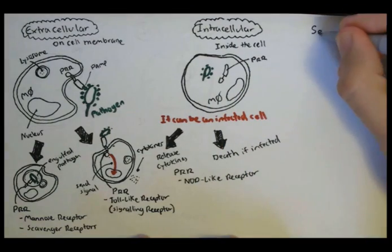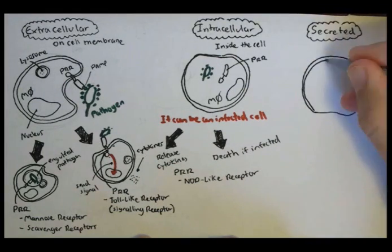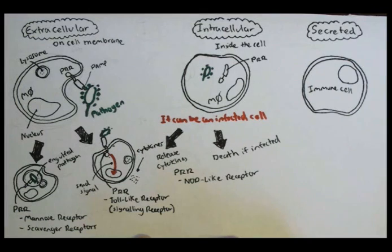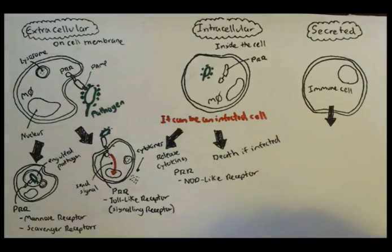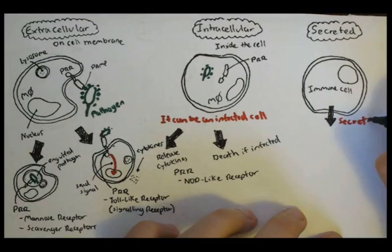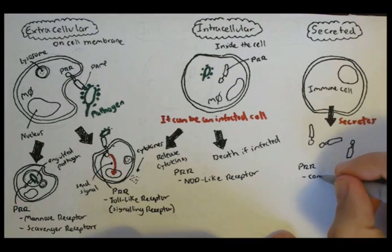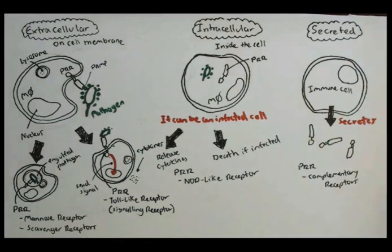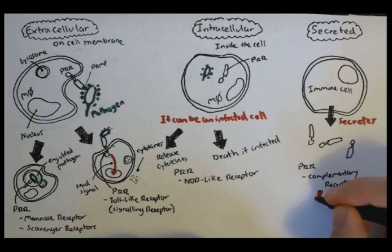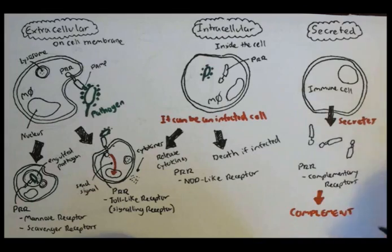The last type are the secreted PRRs, which are secreted by the liver and by immune cells. After they are secreted, they have no relation to these cells and are part of a different system. There are many types of secreted receptors, but we are mainly looking at the complement receptors, which are usually secreted by the liver and induce the complement cascade — a very important process in innate immunity.